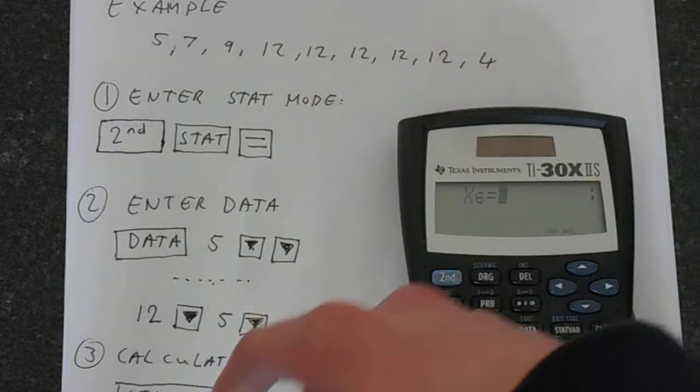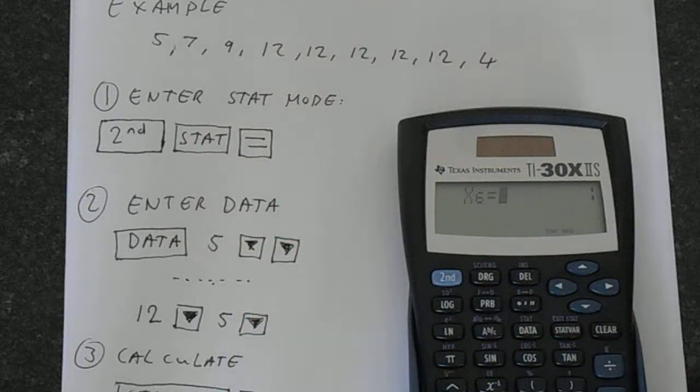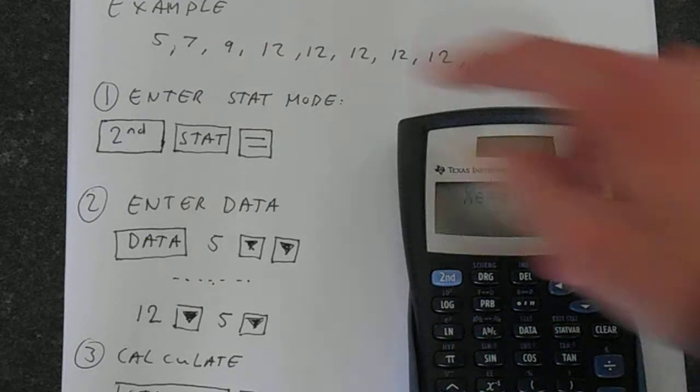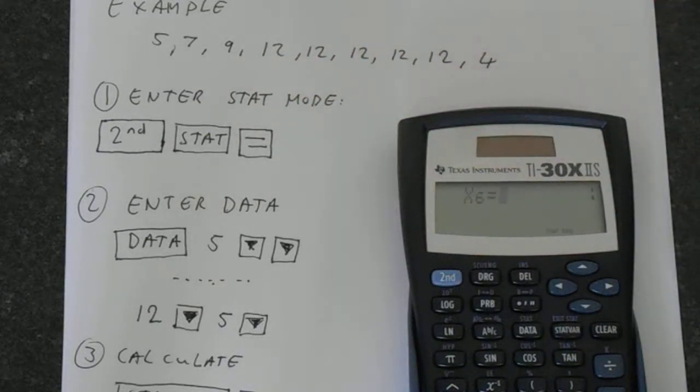This is very simple to do. Just enter your data and press down twice if there's nothing new. Or if you're doing frequency, just change the values of the frequency to the number. We've got five here, so we're putting frequency as five.